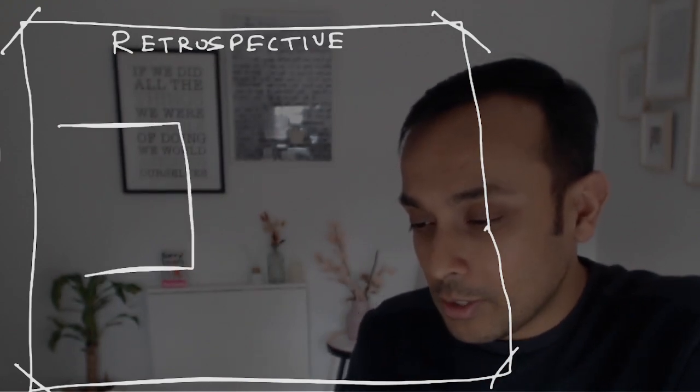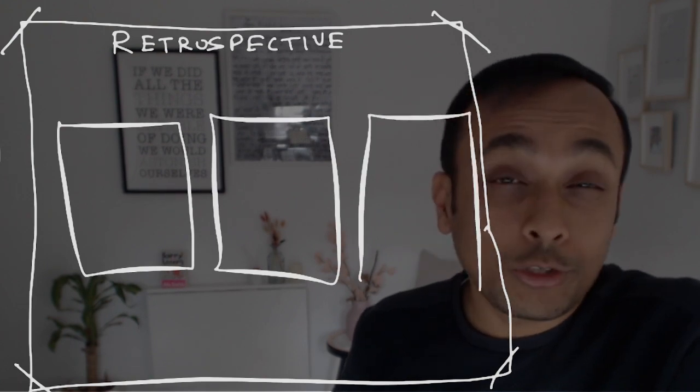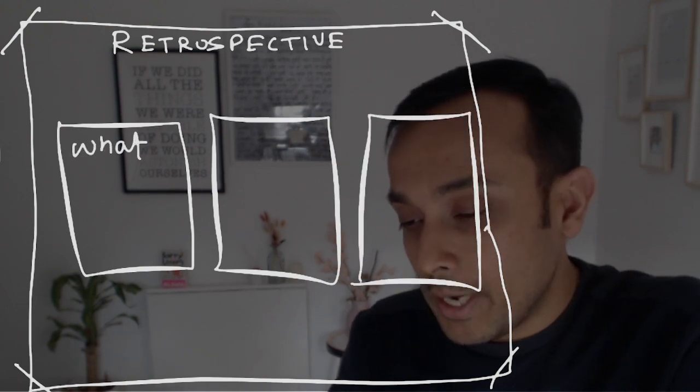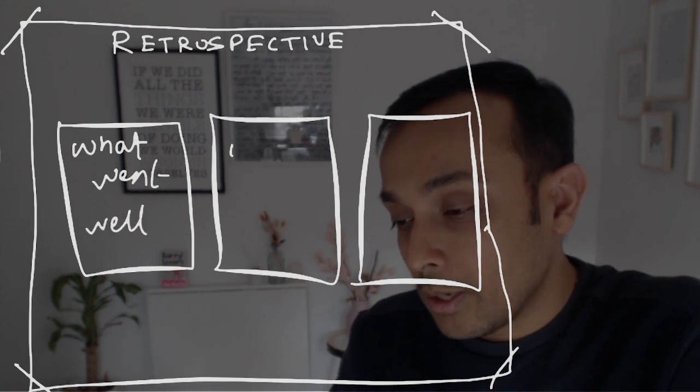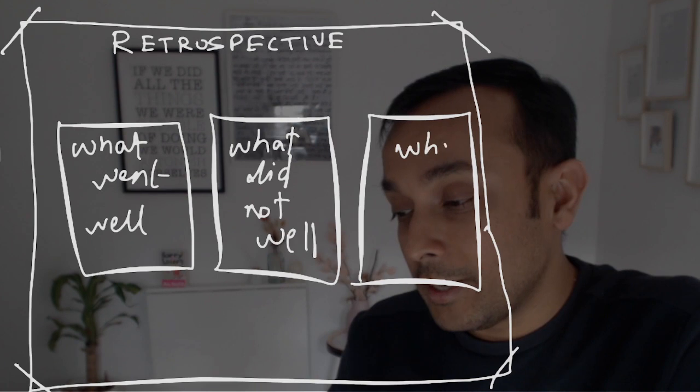Whenever we talk about retrospective, we think of these three boxes. What are we writing in these three boxes? What went well, what didn't go so well, and what can we do better, right?